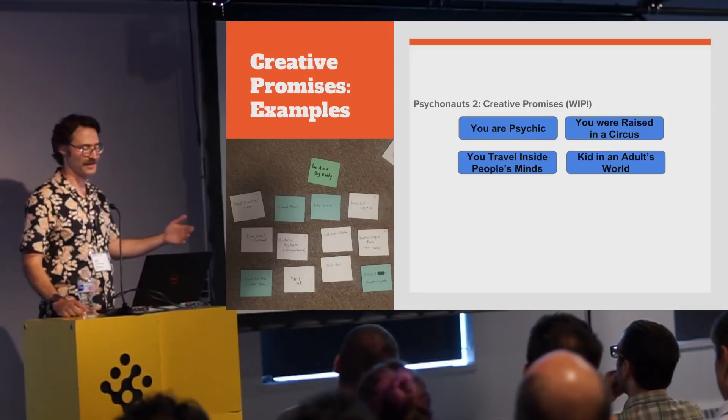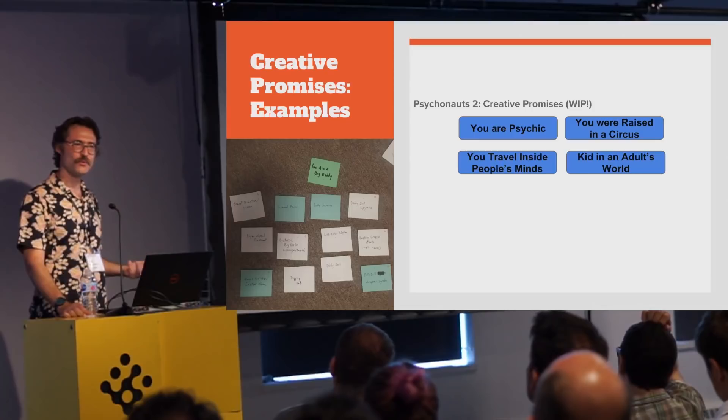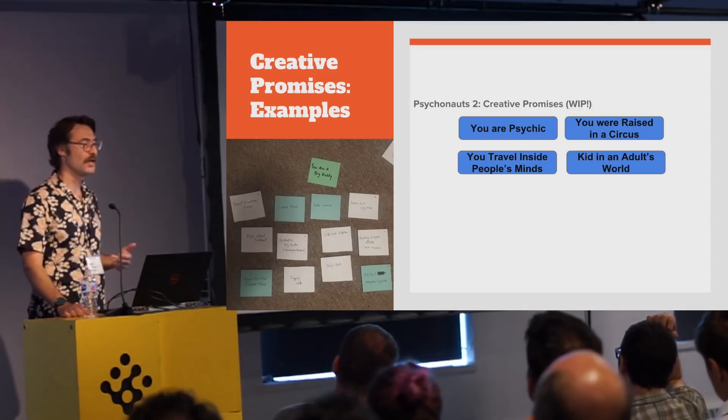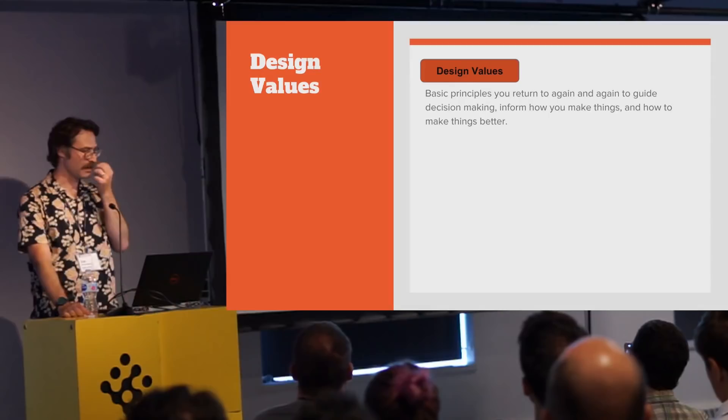In the case of Psychonauts 2, some of the promises we're exploring are: you're a psychic; you're raised in the circus; you travel inside people's minds and help them; you're a kid in an adult's world. These promises might seem really straightforward and clear — and that's kind of the point, and what makes them so powerful as a creative framework. You can't hide behind them as vague and inspiring ideas; you have to stand next to them and help support them and help them come to life.